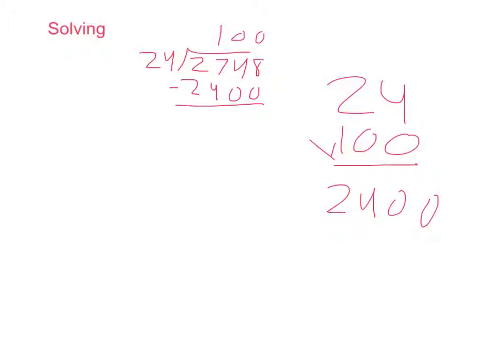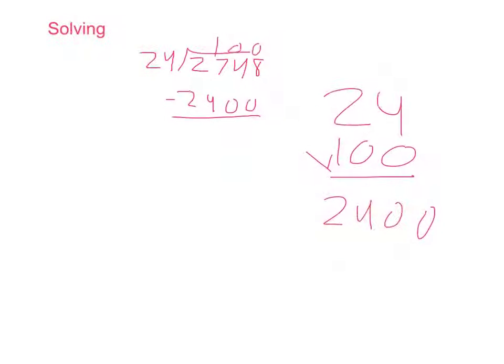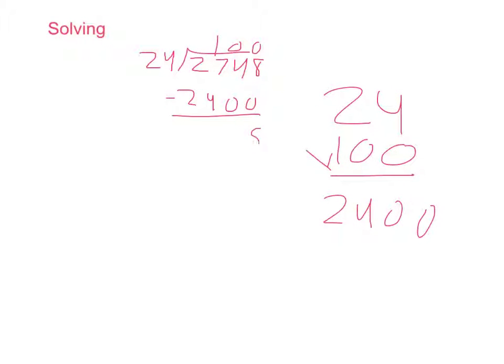Then when you subtract 2,748 by 2,400, you get 8 minus 0 is 8, 4 minus 0 is 4, 7 minus 4 is 3, and 2 minus 2 is 0. So you have the answer of 348, but you can't stop there because that's too big of a remainder and you can divide it more.